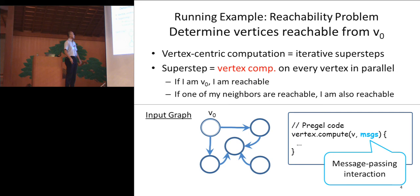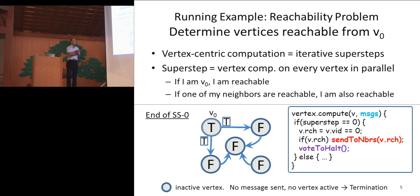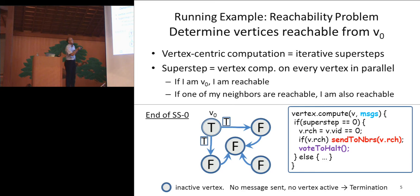For the first super step, each vertex checks if it is vertex 0 or not, and it stores the result at its value. This vertex is V0, so it has true here, and others have false. This code corresponds to this part. Also, if you have true, then you send this true to your neighbors, so that the neighbor knows that it has a reachable neighbor. It sends true to its neighbors. After that, every vertex does vote-to-halt.